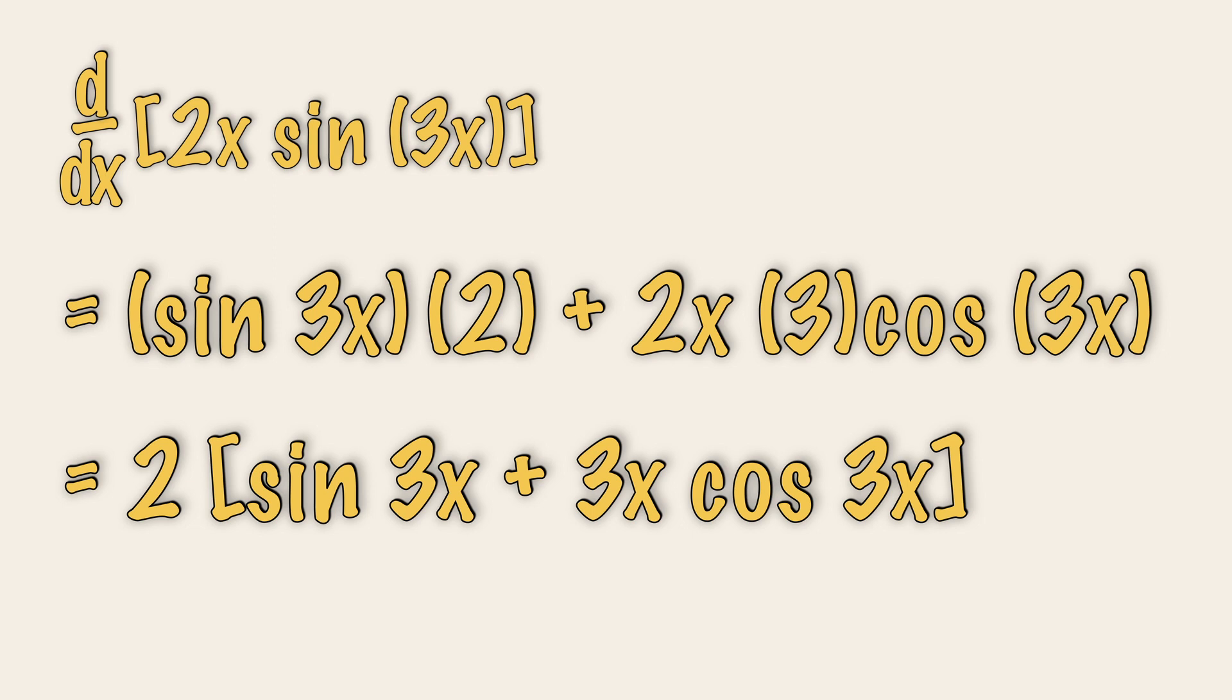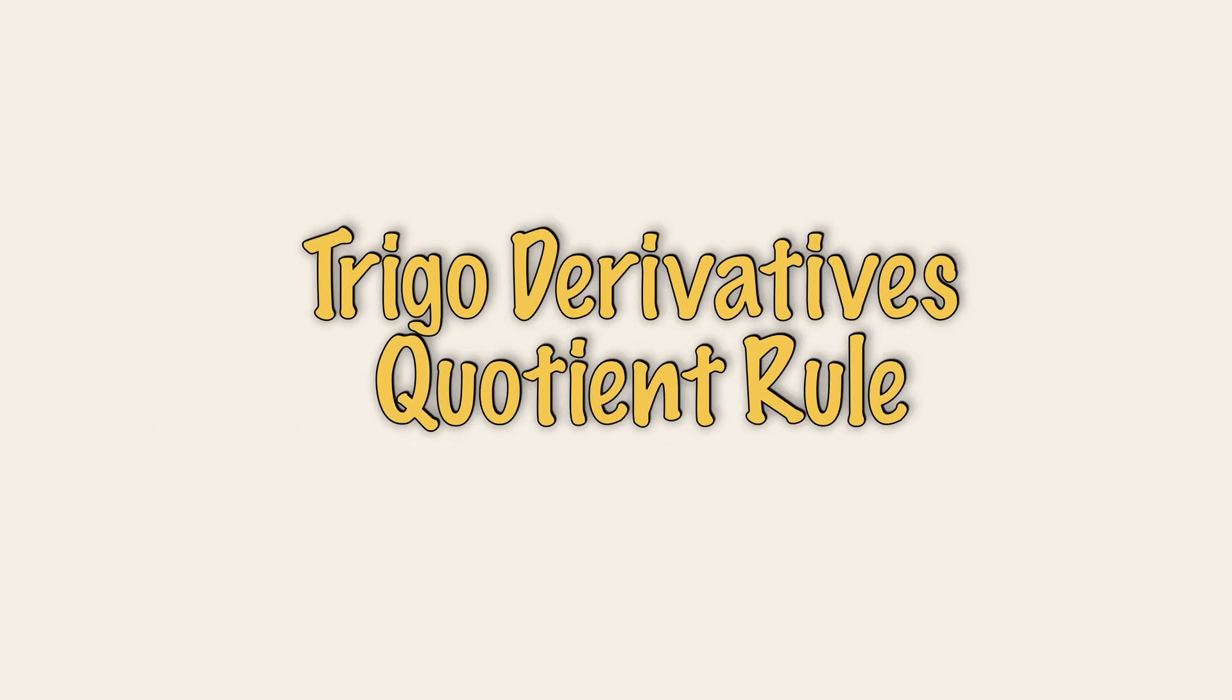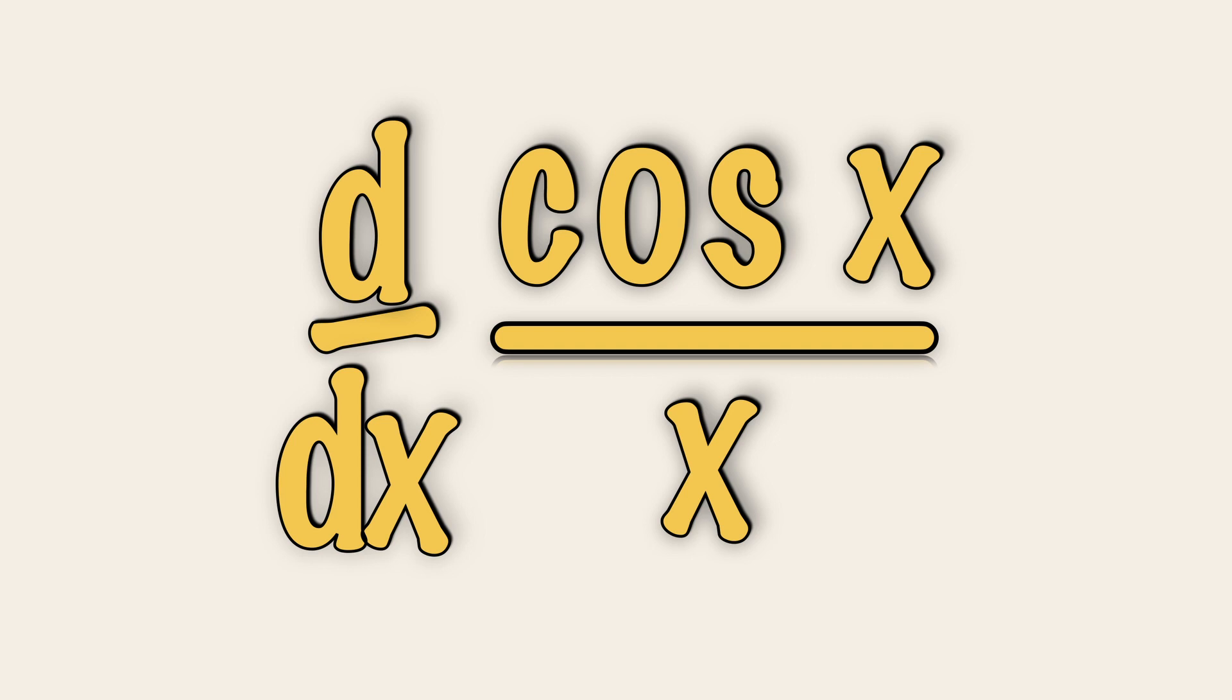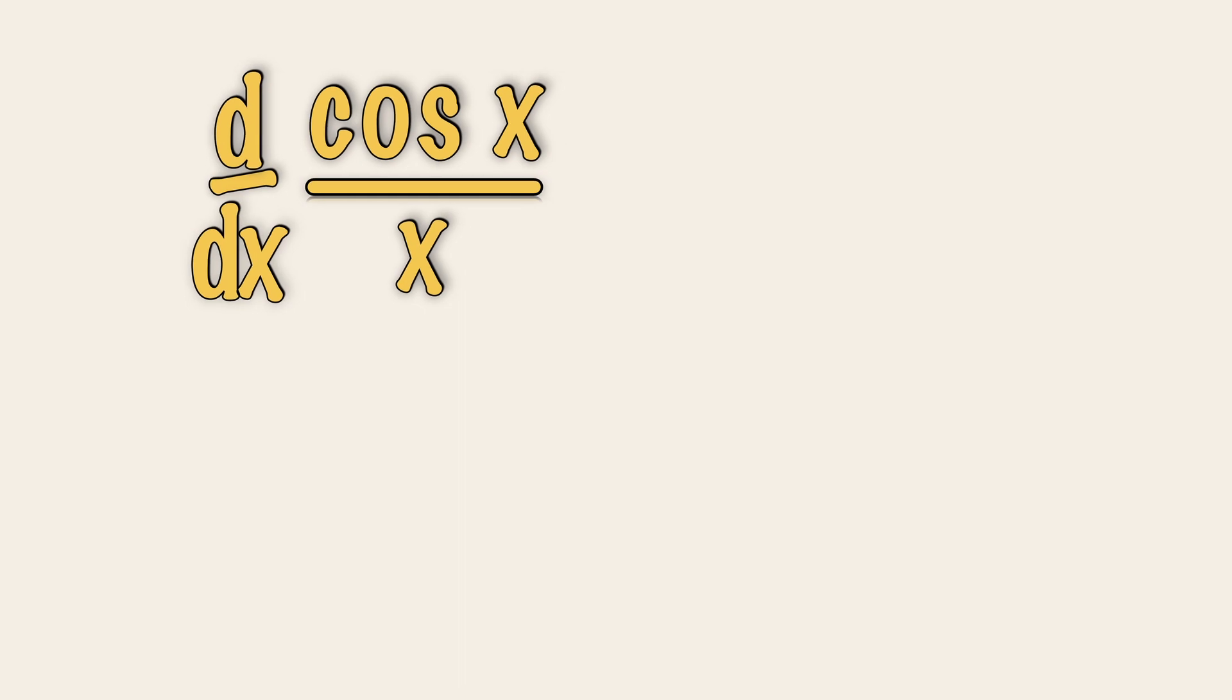If you need help with the product rule, do check out the video linked in the description box below. I have a full range of videos that includes the product and the quotient rule for you. Last but not least, let us introduce another question that involves the quotient rule. Now the quotient rule is introduced when you have a quotient of two functions, like this, cosine x over x.